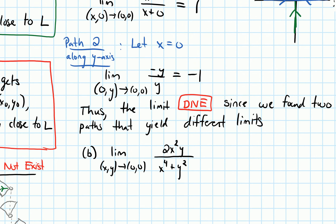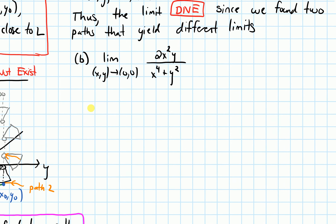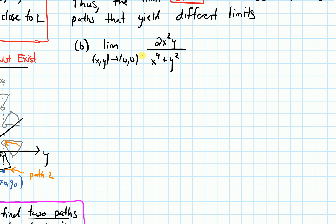Let's look at part B now. Let's take the limit as (x,y) approaches (0,0) of a different function. As always, it's a good idea to plug in the value first. If we plug in 0 for x and 0 for y, we get 0 over 0 — an indeterminate form. This problem says to show this limit is DNE, so let's try approaching along different paths.